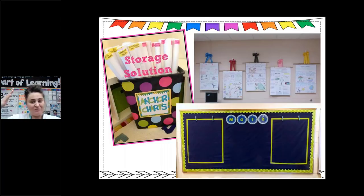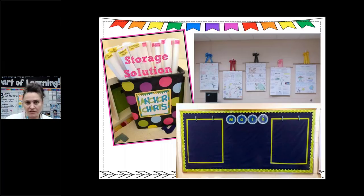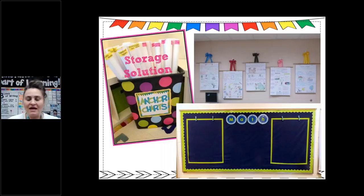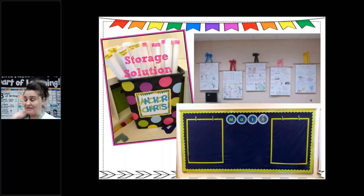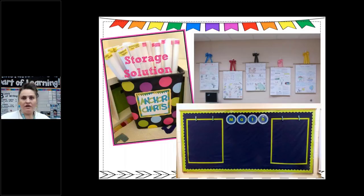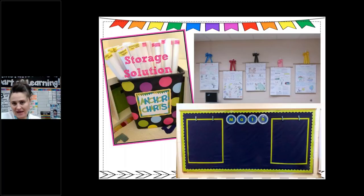Another idea for using anchor charts is to have a specific wall for them — like a math wall or a 'what we're learning' wall — so kids always know where to look. If you don't have space and can't roll them up, another option is to take a photo with your phone, print it out as a 4x6, and either make a ring of those or display them in small IKEA frames with binder rings.